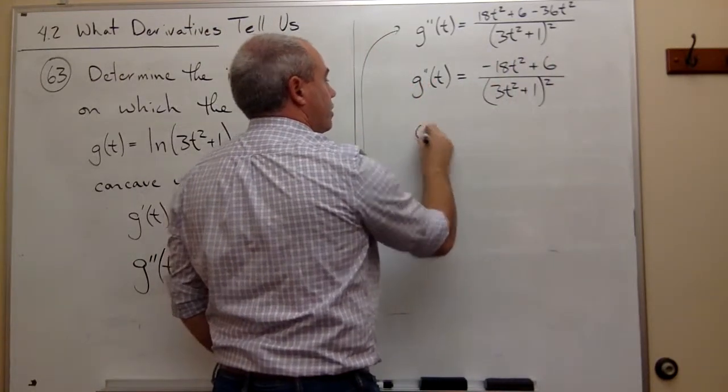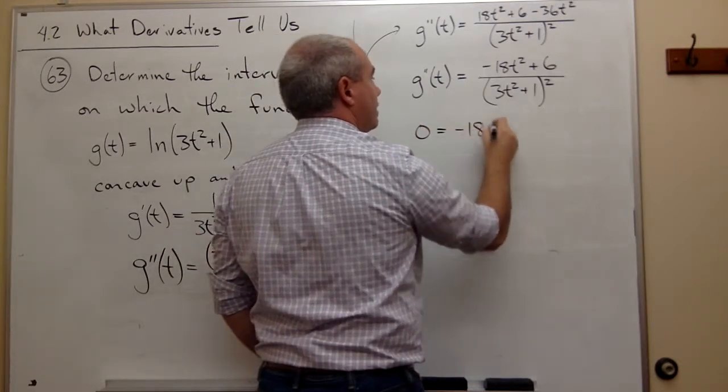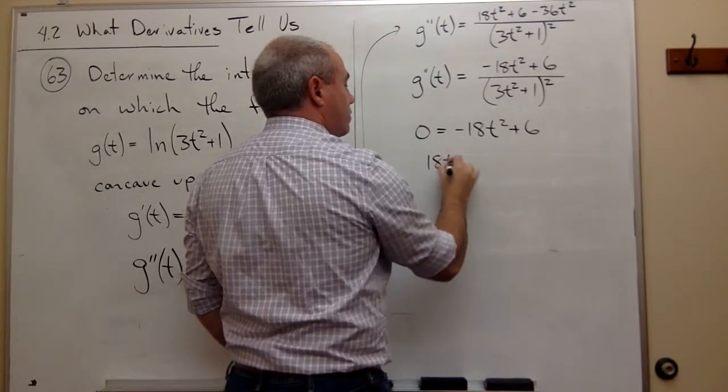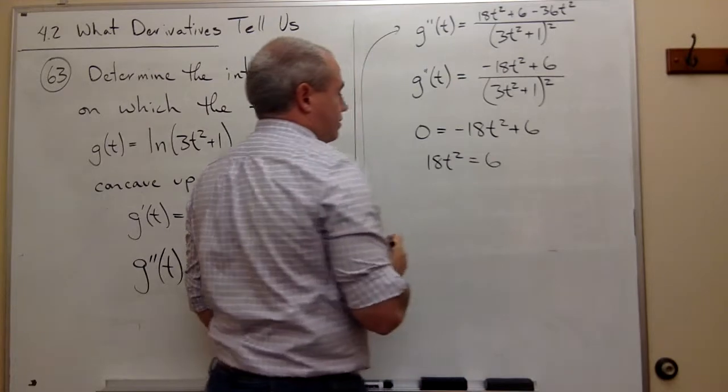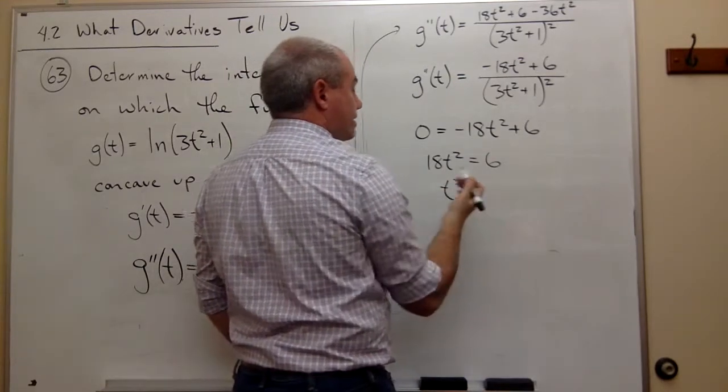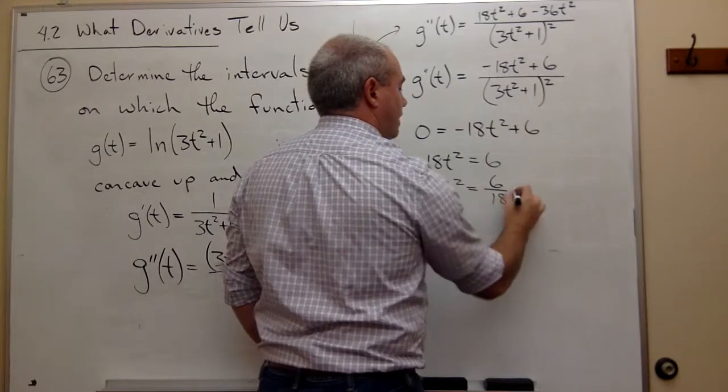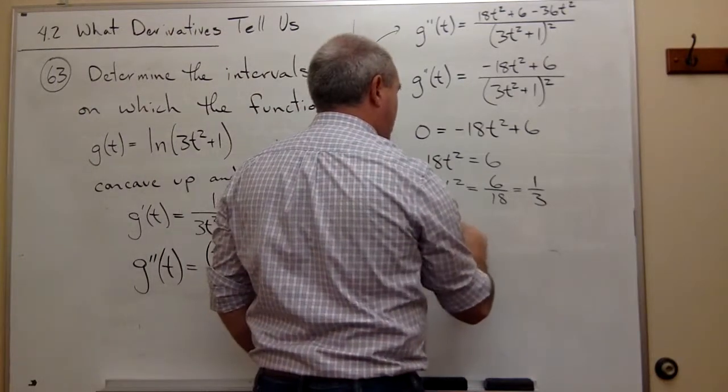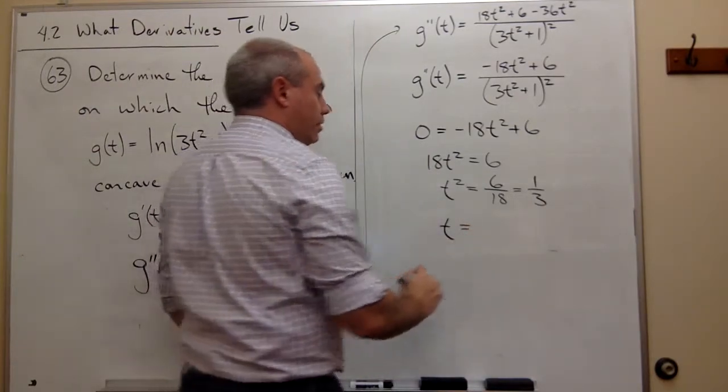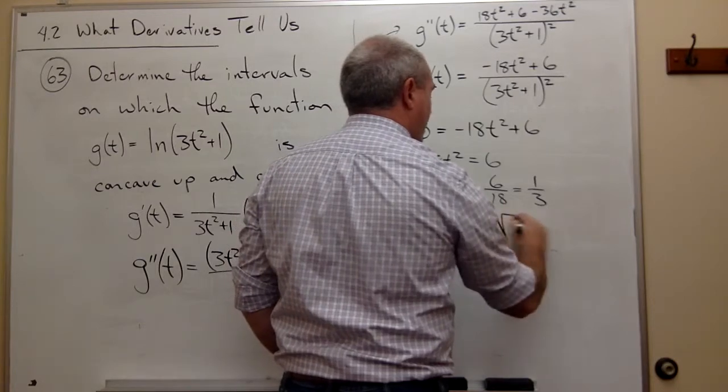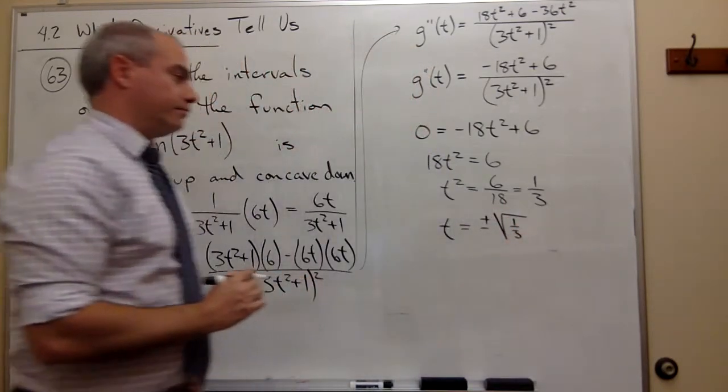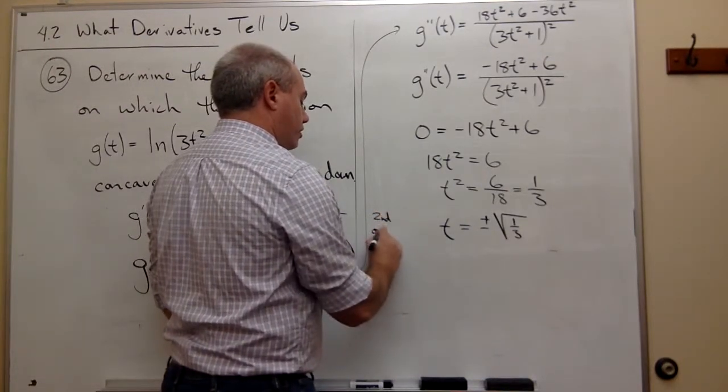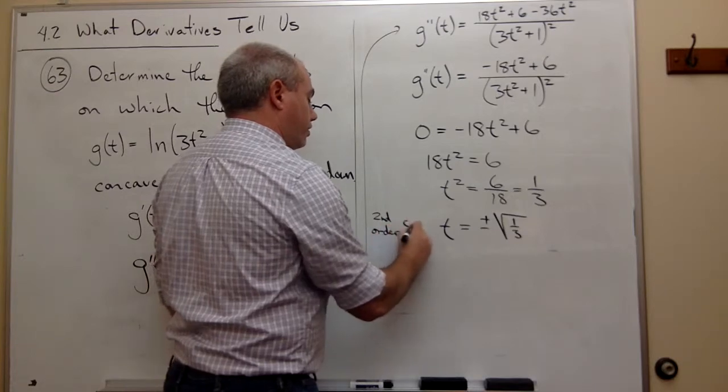In other words, where is 0 equal to -18t² + 6? Or, where is 18t² equal to 6? Or, where is t² equal to 6 over 18? But that's just 1 over 3. And that means that t would be equal to plus or minus the square root of 1/3. And these are my second order critical points.